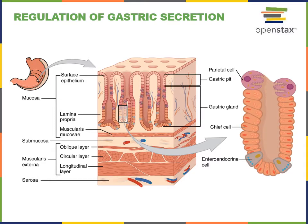Gastric pits are folds in the surface of the mucosa. The gastric pits contain chief cells that produce the precursor to the enzyme pepsin, known as pepsinogen. Parietal cells found in the gastric pits produce hydrochloric acid. These parietal cells also produce intrinsic factor, which is important for the absorption of vitamin B12. As pepsinogen released by chief cells travels out of the gastric pit, it becomes activated by the hydrochloric acid produced by the parietal cells.